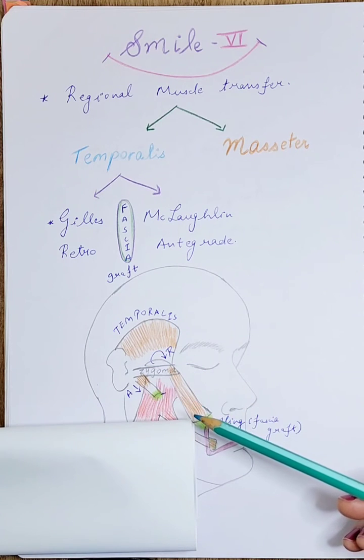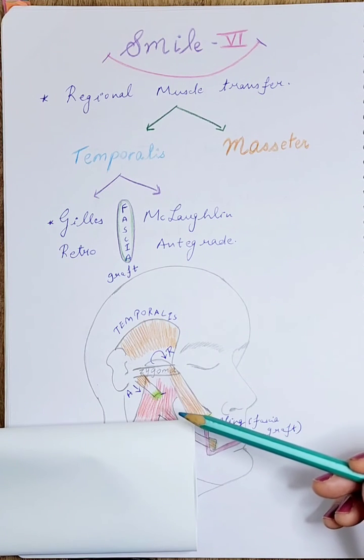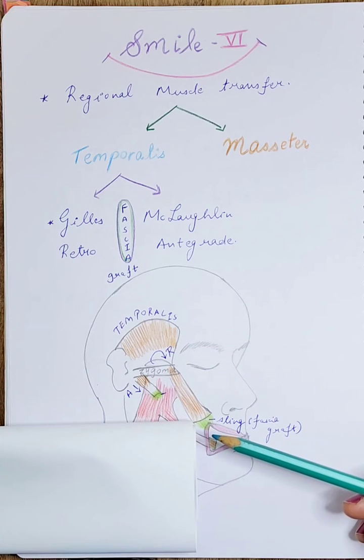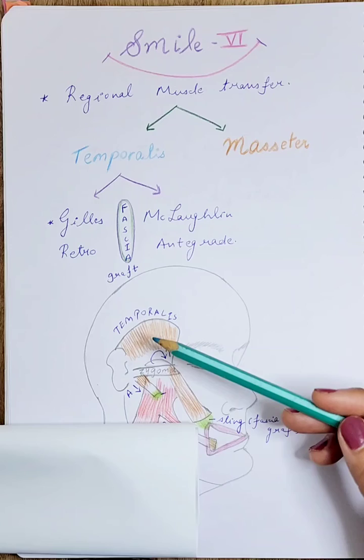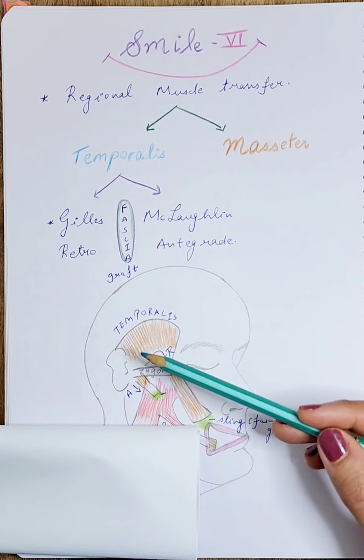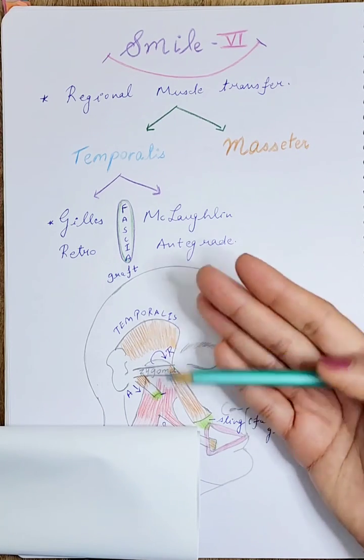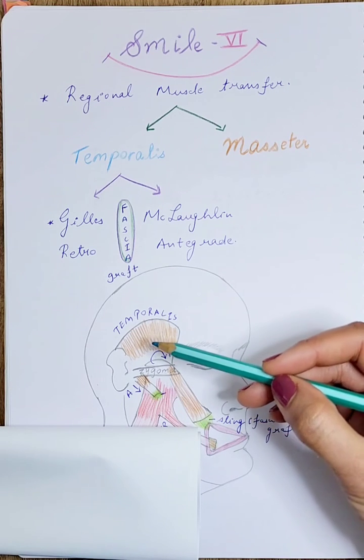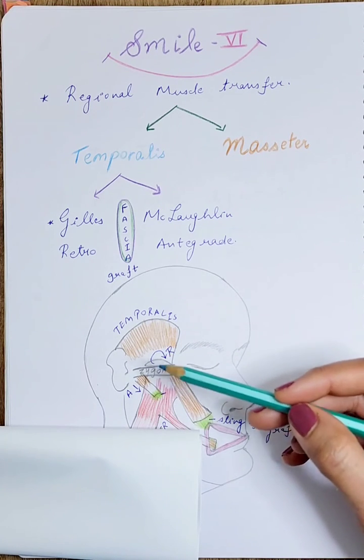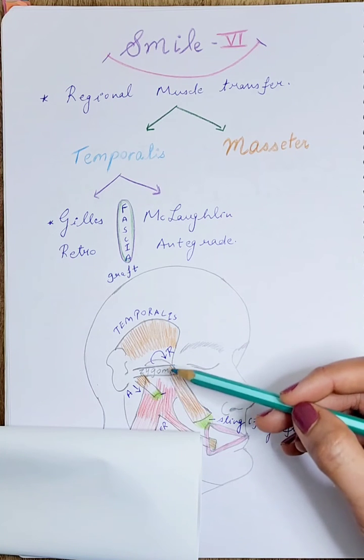In a retrograde transfer, the muscle is dissected from its origin and flipped over. It is passed from over the zygoma, on top of it, not under the zygoma, and then transferred to the region of the oral commissure.